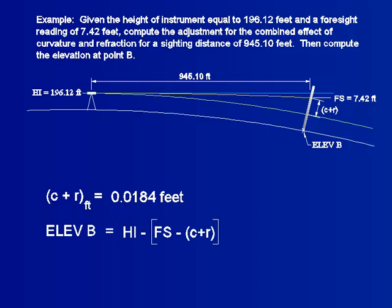Now, the elevation can be computed by subtracting c plus r from the foresight reading and subtracting from the HI. Rounding the solution to appropriate significant figures results in an elevation of 188.72 feet at point B.